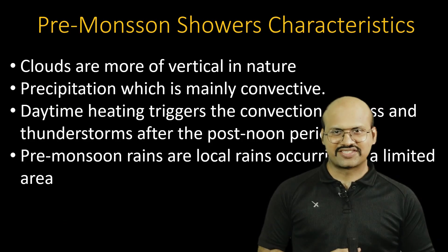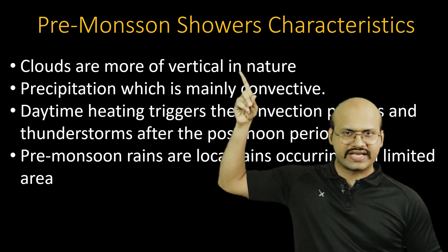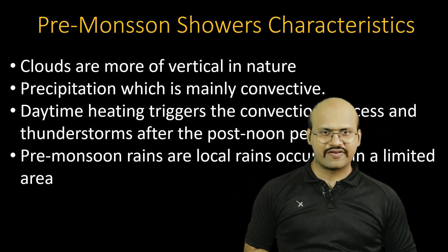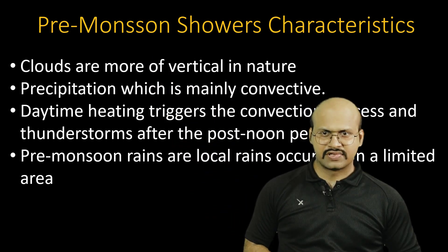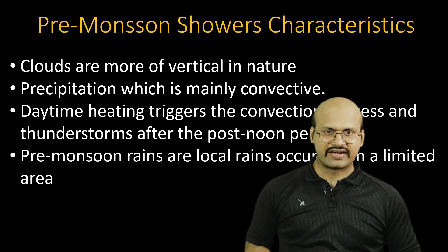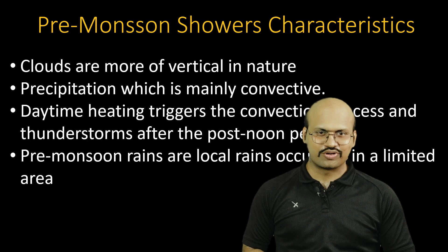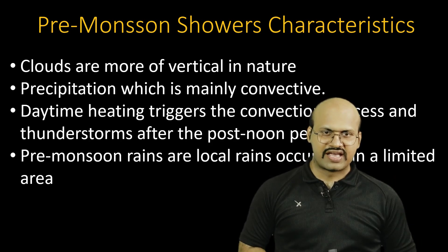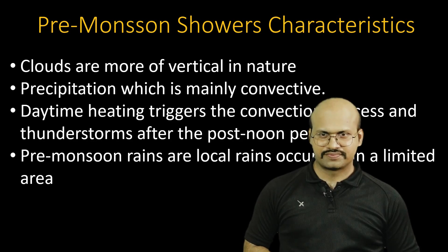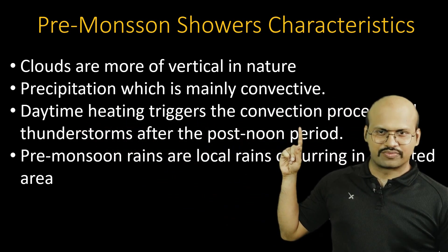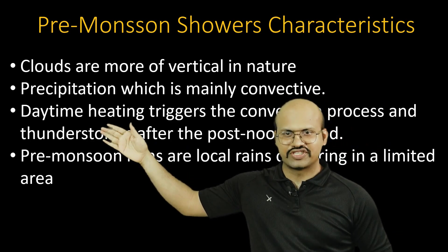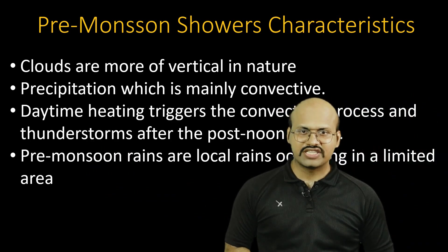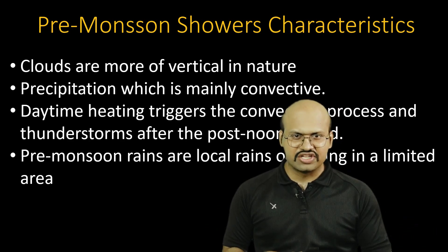Let's look at some important characteristics of pre-monsoon showers. First, the clouds are more vertical in nature because the heated air in contact with the land rises vertically, forming vertical clouds. Second, precipitation is mainly convective, occurring because of the convection process — air rises vertically carrying moisture, which condenses to form clouds and give rainfall. Third, daytime heating triggers the convection process. Fourth, pre-monsoon rainfalls are local rains occurring in limited areas — they do not affect very large regions but occur in smaller areas.